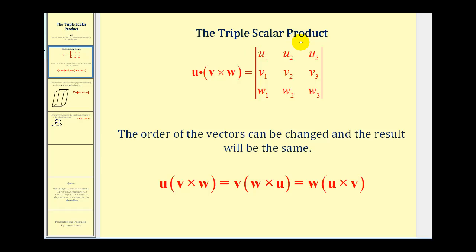The triple scalar product states that vector u dotted with the cross product of vector v and w is equal to the determinant where the first row is equal to the components of vector u, the second row is equal to the components of vector v, and the third row is equal to the components of vector w.